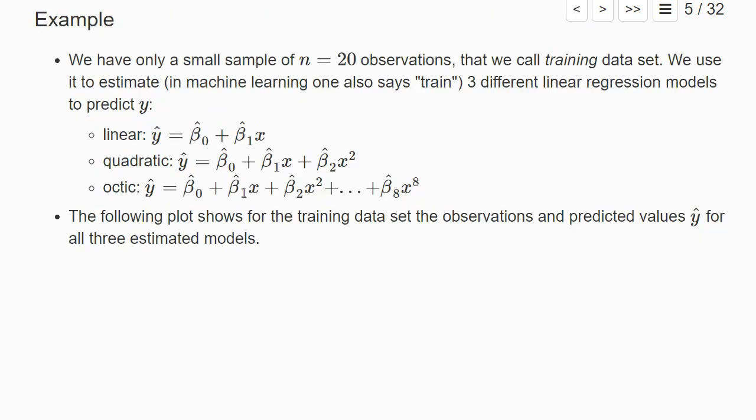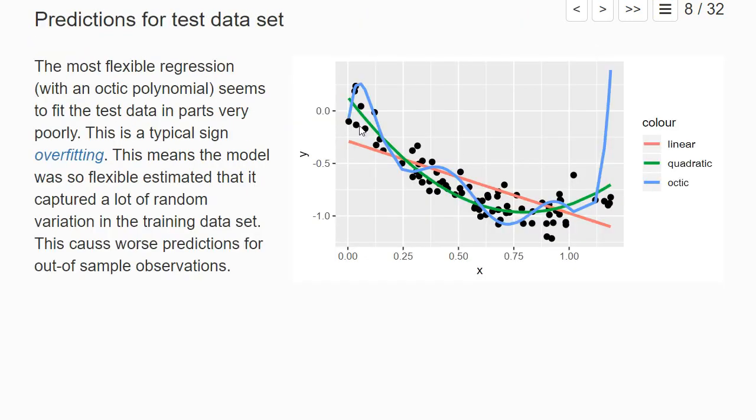plug in new values of x with the specified coefficients and compute the y-hat. That's what we do for this test data set. We see that this octic curve, which has the best fit on